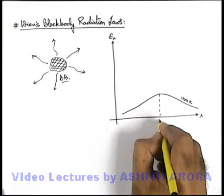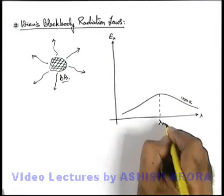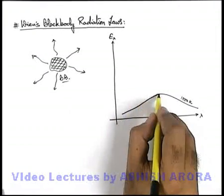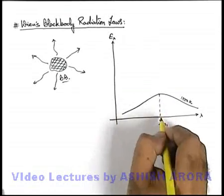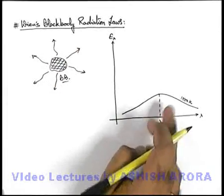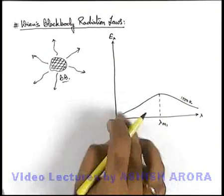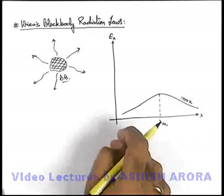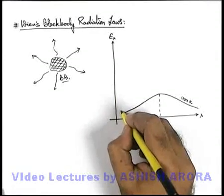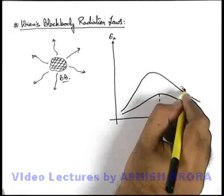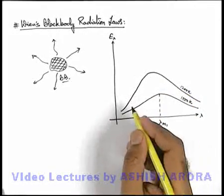Then it was observed that at a particular wavelength, lambda m one, the graph was getting a peak. That means the energy corresponding to this wavelength from the black body will be maximum. And when temperature was increased, and again experimentally the graph was plotted for energy corresponding to various wavelengths, the graph was obtained like this.